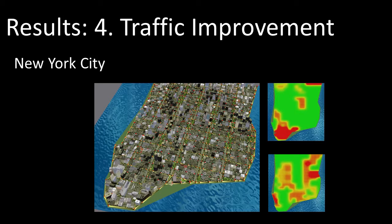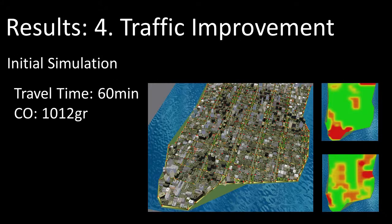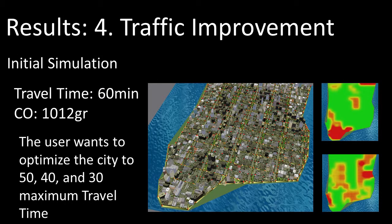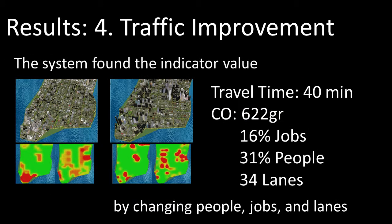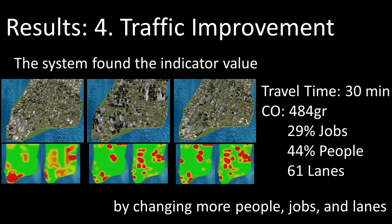In this final example, we seek to reduce travel times in New York City. By enabling different sets of network changes, they reduce travel times, as well as achieving a reduction in CO emissions.